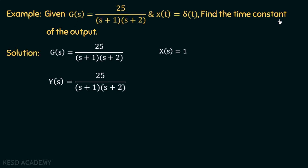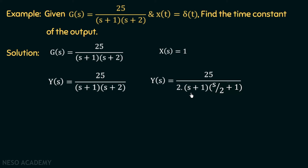We will now calculate the time constant. For that, we need to find the time constant form of this function, which is Y(S) equal to 25 over 2, multiplied with (s+1) multiplied with (s/2 + 1). We have taken 2 as a common factor, and now it is in the time constant form. Here we can observe that we have two poles in this transfer function, so we will have two different time constants. In the previous lecture, we dealt with a first-order transfer function, which had only one pole and hence only one time constant.